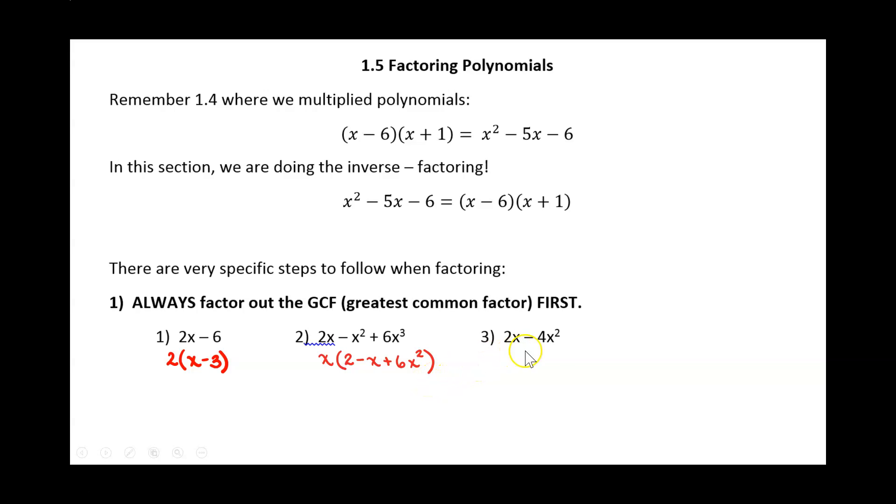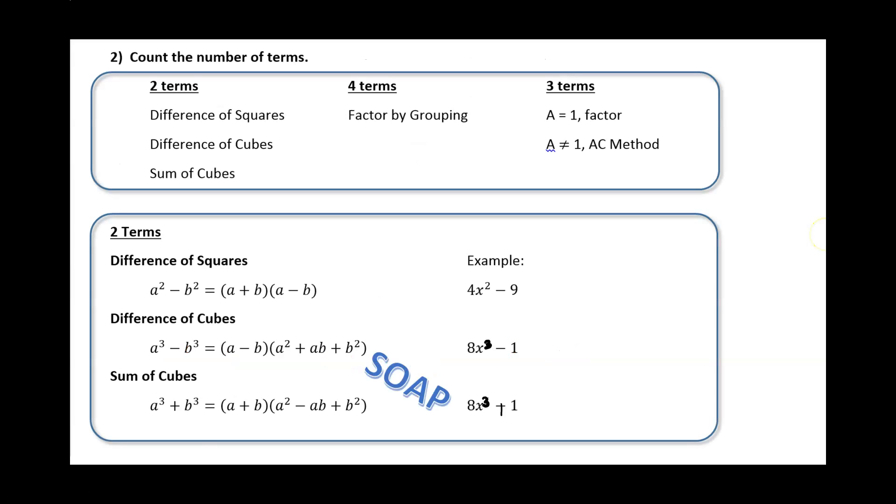Alright, look at the next one. Two terms, so it's a binomial. So what is the largest thing that they have in common? 2x. So I'm going to factor out a 2x. 2x divided by 2x would be 1, then negative 4x squared divided by 2x would be a negative 2x.